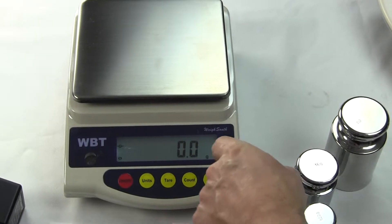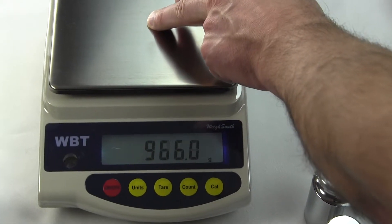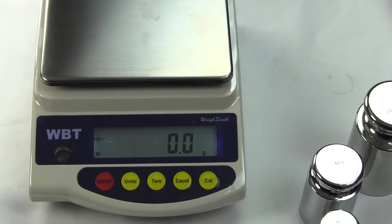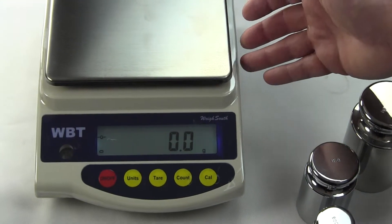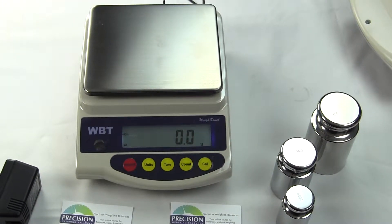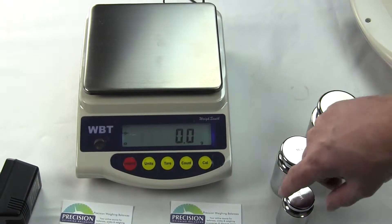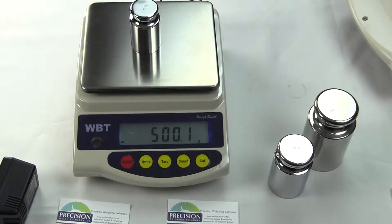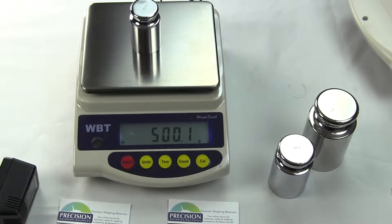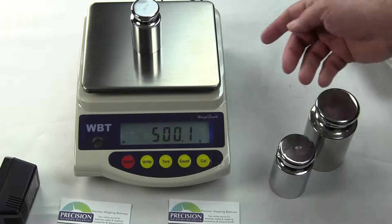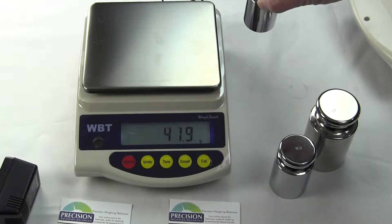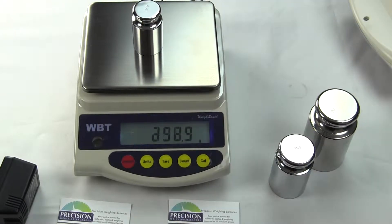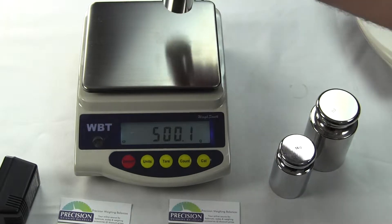This scale is 5100 grams by a tenth of a gram, so you have 5.1 kg by a tenth of a gram. There are three models that WaySouth has in the WBT series. There's the WBT 100 which is 100 grams by 0.001 gram, the WBT 602 which is 600 by 0.01, and this unit here is the WBT 5001 which is 5,000 grams by a tenth of a gram.